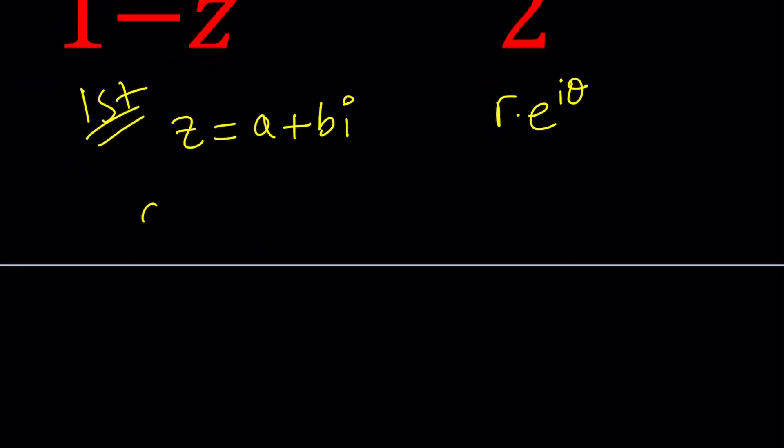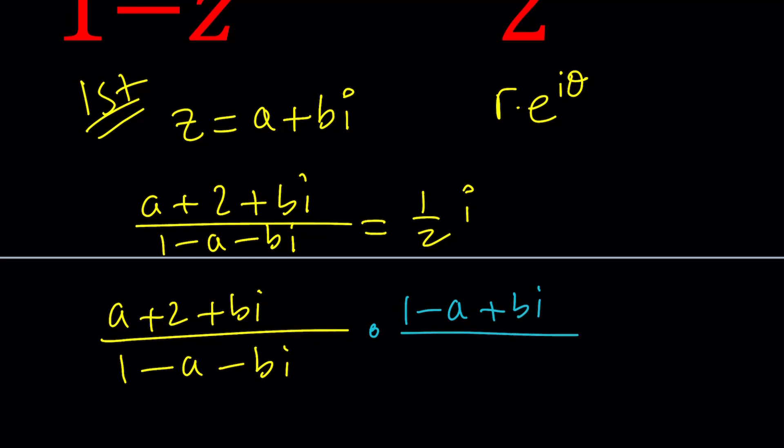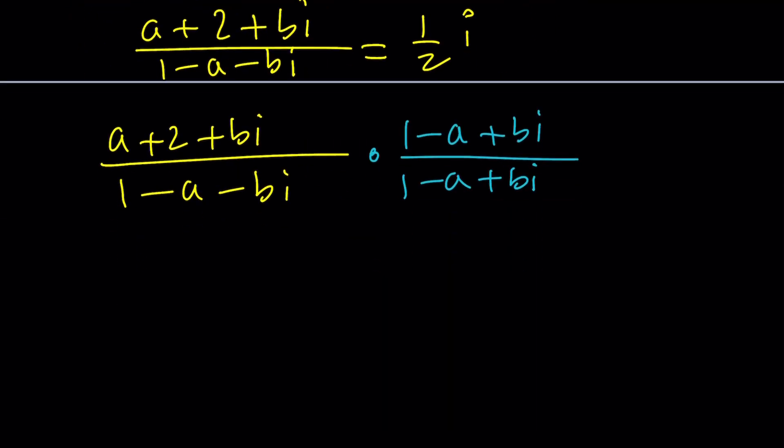We're going to get A plus 2 plus B I, after arranging the terms, and now we're going to divide it by 1 minus Z, which is going to be 1 minus A minus B I, and that's equal to I over 2. Let's write it as one half of I. Now I want to focus on the left hand side, and multiply the top and the bottom by the conjugate of the denominator.